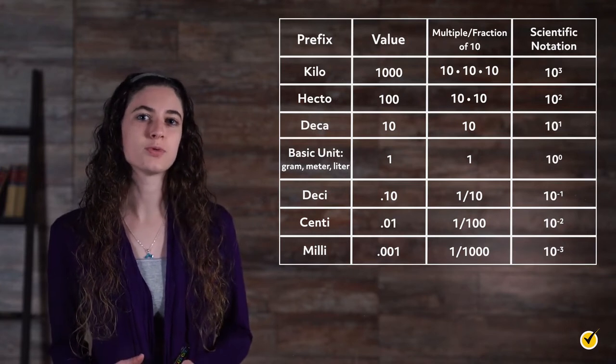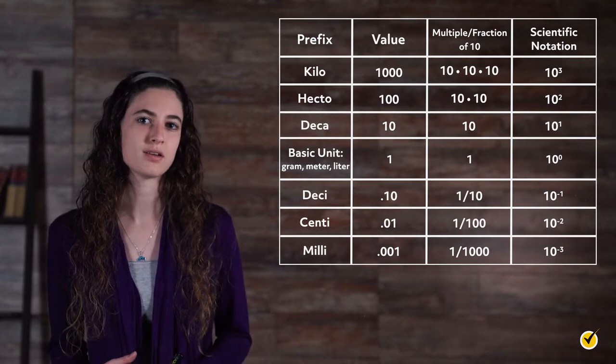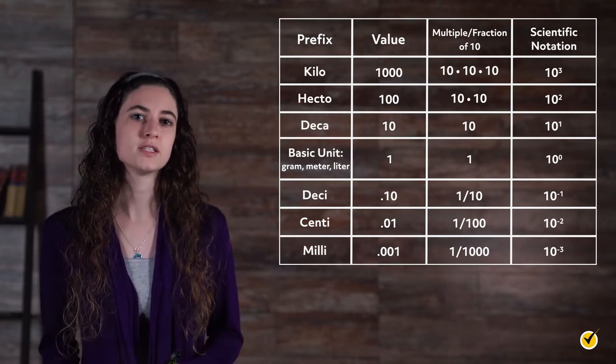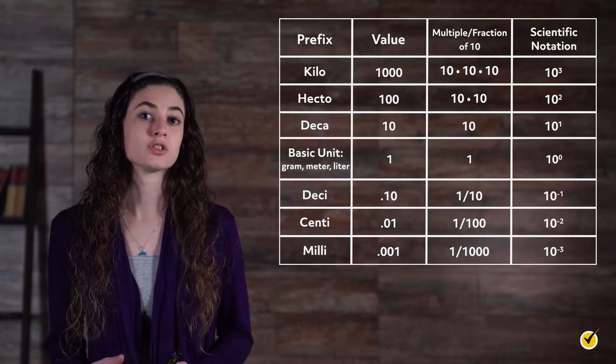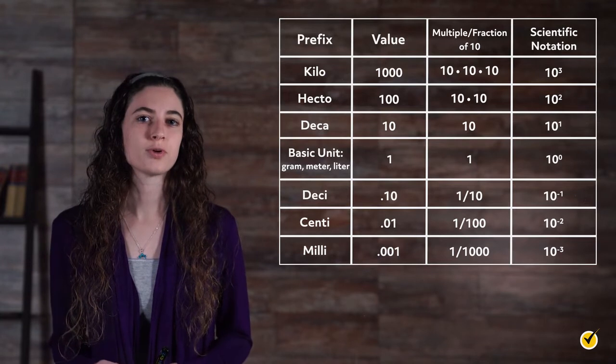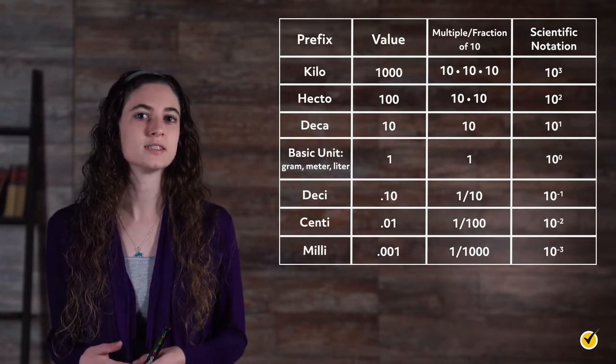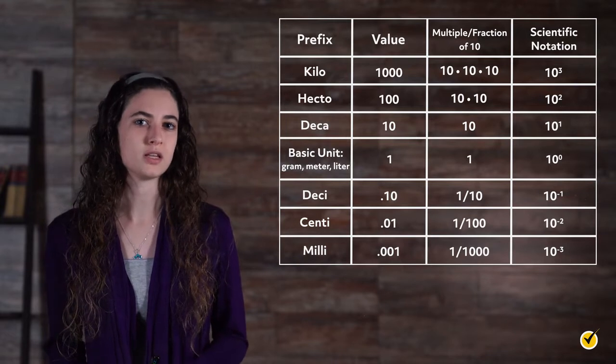To read this table, start at the prefix and determine how much smaller or larger it is to the base unit. For example, the base unit of a meter is 100 times larger than a centimeter. Conversely, for every meter, there are 100 centimeters. The order of the prefixes is very important, as it indicates whether the metric system unit is larger or smaller than the basic unit.